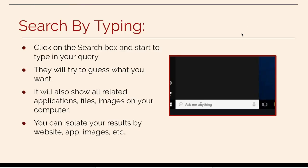One way you can search is by typing in the search box in the bottom left. You'll type in your query, and then it will try to guess what you want. It will only show related applications, files, or images on your computer that match the search. You can also isolate your results by website, app, or images.